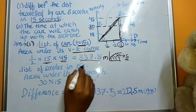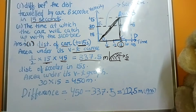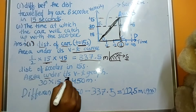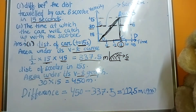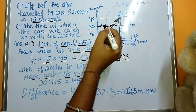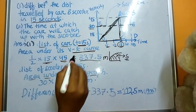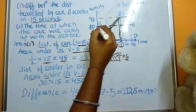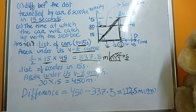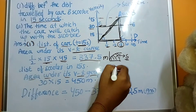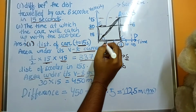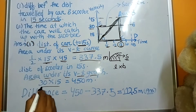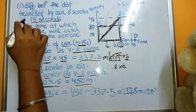Now we find the distance of the scooter in 15 seconds using the same method. The area under the VT graph curve of the scooter gives us the displacement. We find the area up to 15 seconds only. This forms a rectangle, and the area of a rectangle is length × breadth. The length is 30 and the breadth is 15, so 30 × 15 = 450 meters.